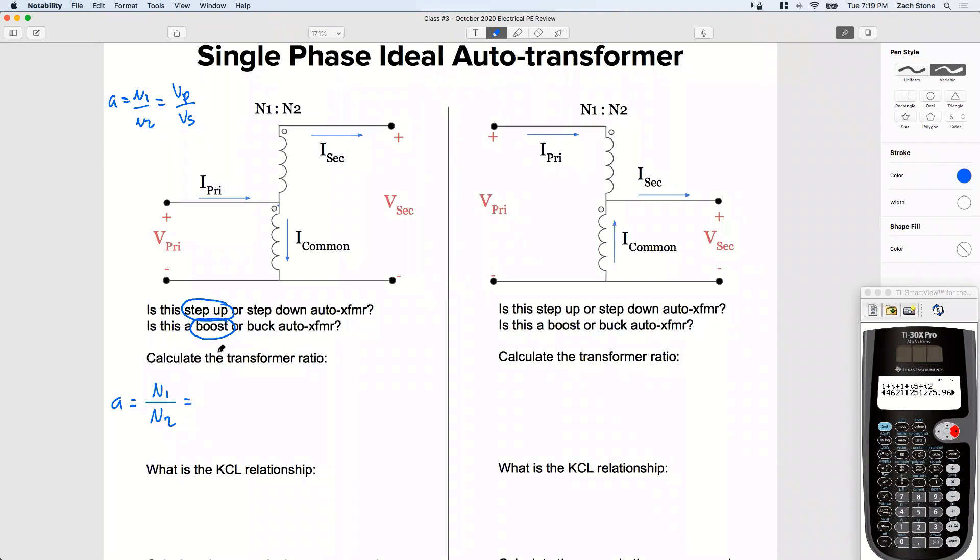Next, let's use the winding relationships of our auto transformer. On the primary side on N1, how many turns do I have? Let's call this our common winding. It's common to both sides. So N1 is just going to be equal to Nc.